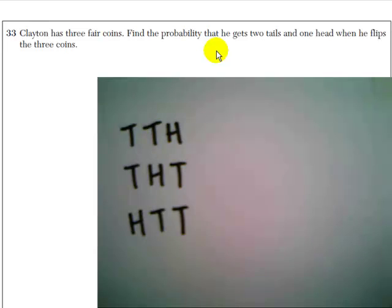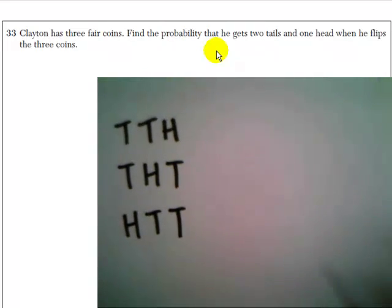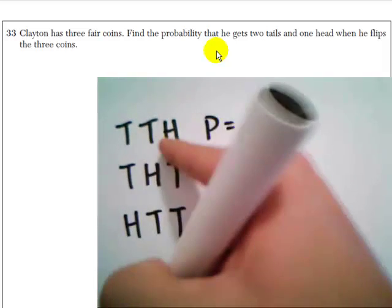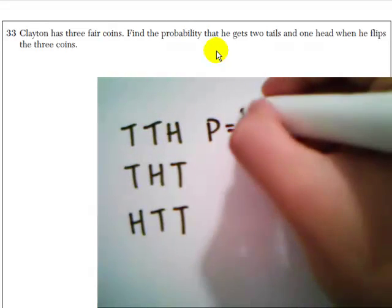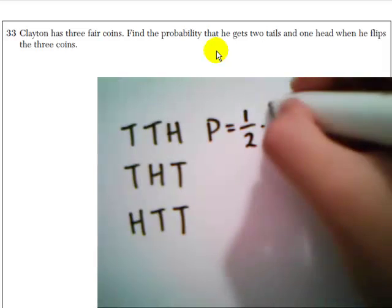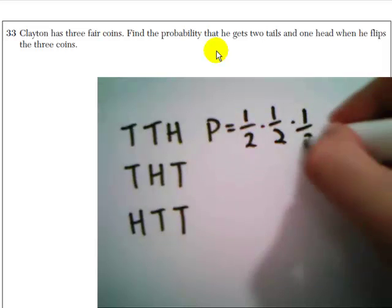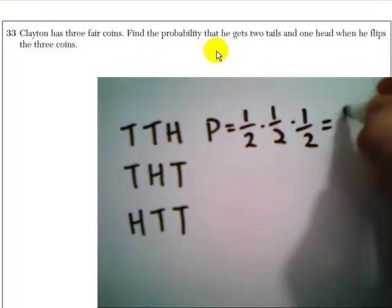Now the probability of each of these is going to be the same. Because the probability of this first one happening, tails, tails, heads, is the probability of tails, which is one half, times the probability of tails, which is one half, times the probability of heads, which is one half. Multiply all those out together and we get one eighth.